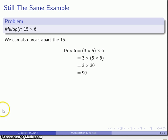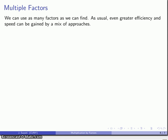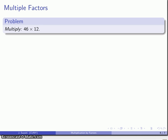Now, the only requirement here is that I want to be able to find the factors easily. The numbers that I'm working with are numbers that I have to want to work with. So I can use as many factors as I want to, and I can gain a lot in terms of efficiency and speed if I use a mixture of approaches. For example, consider the product 46 times 12. If you really want to get a good sense of how this works, do this in your head. Don't write anything down, just do the multiplication mentally.